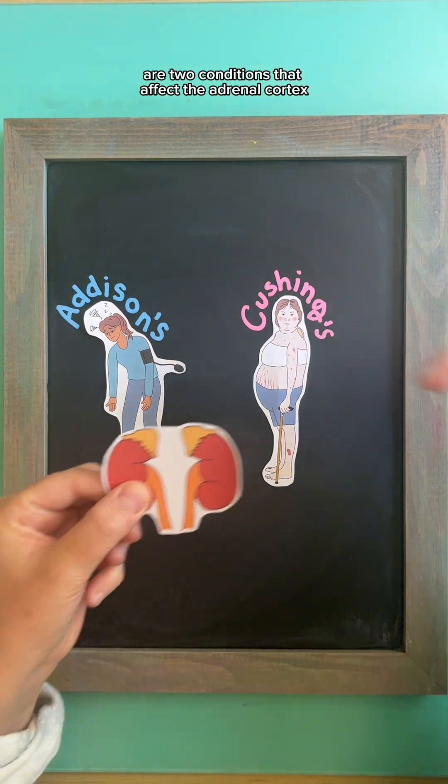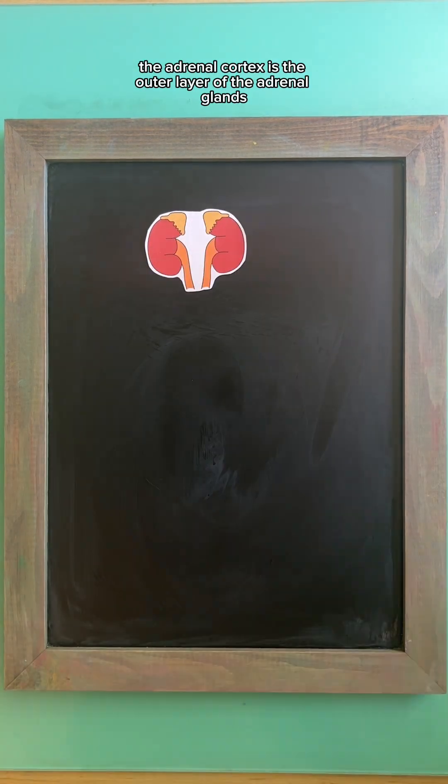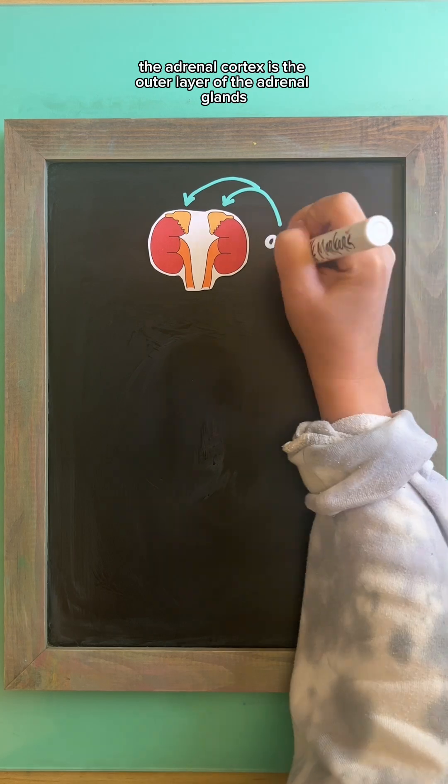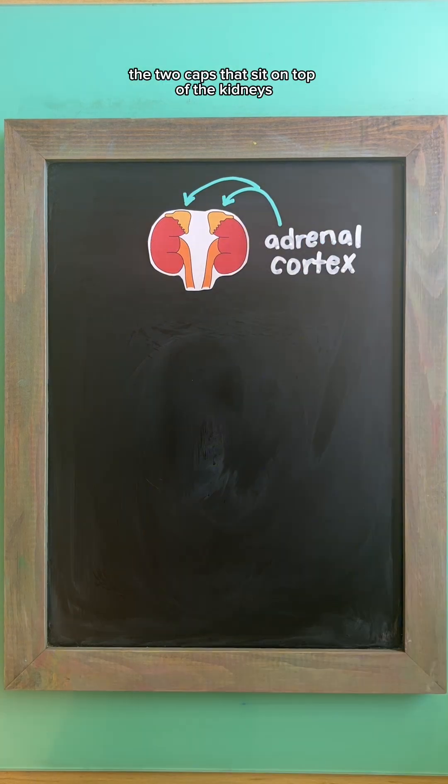Addison's and Cushing's are two conditions that affect the adrenal cortex. The adrenal cortex is the outer layer of the adrenal glands, the two caps that sit on top of the kidneys.